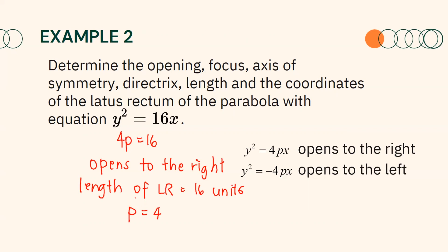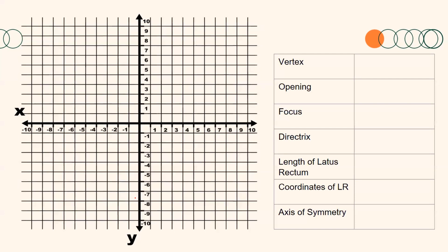Let us have an illustration to easily determine the elements of the graph of the parabola. The vertex is at the origin, 0, 0, and it opens to the right. Since 4p equals 16 and p equals 4, the focus and the directrix are 4 units away from the vertex. Since our parabola opens to the right, the focus is at the point 4, 0.